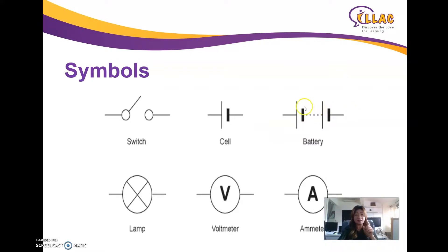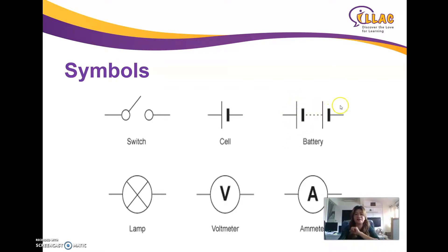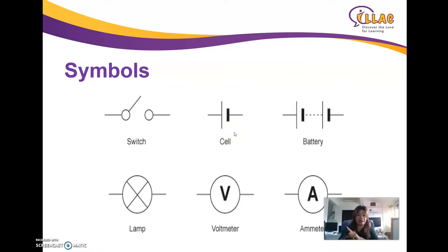Most of the time they don't draw the dotted lines — they will just put them together like a long line, a short line, a long line, a short line. That's how you draw multiple batteries. Each pair of long and short — one pair makes one cell.